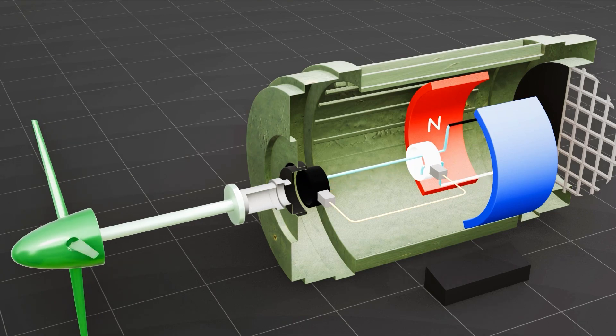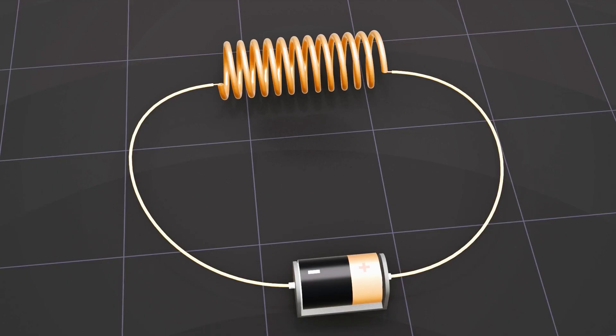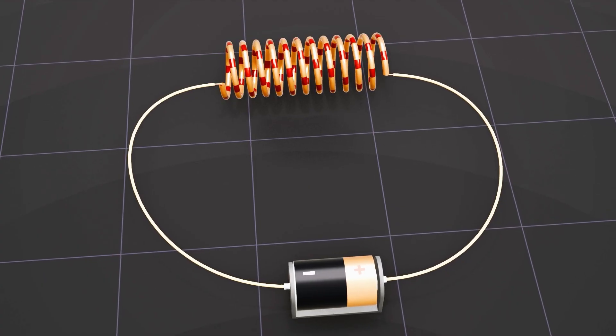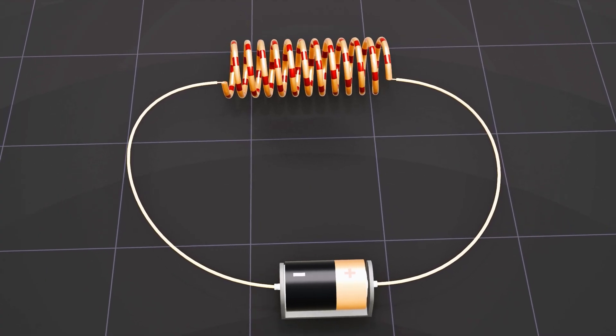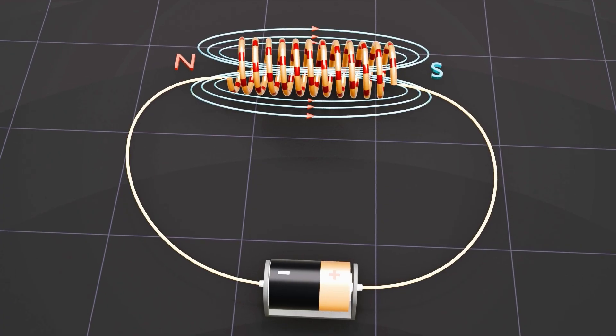Let's start by looking at how an electromagnet works. When an electric current flows through a coil of wire, also known as a solenoid, it creates a magnetic field around the wire.